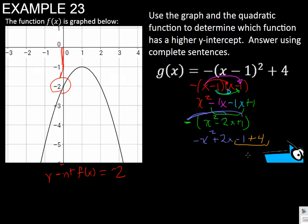Combine our last two terms, which are alike. Negative 1 plus 4 is 3. So it's positive 3. So negative x squared plus 2x plus 3. And we see that that is our y-intercept for g of x.